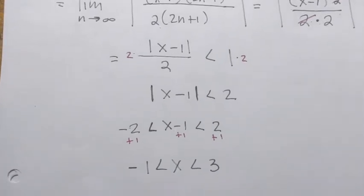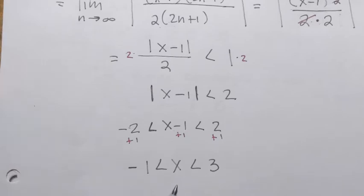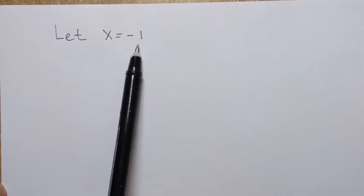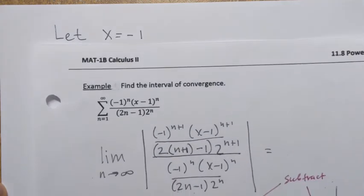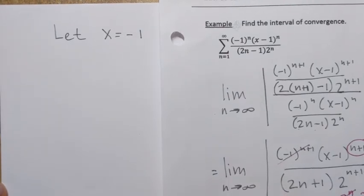Based on the ratio test, our power series converges when x values are between negative 1 and 3. However, the ratio test fails at the endpoints, so it tells us nothing about x equals negative 1 or x equals 3. We must test each endpoint separately.